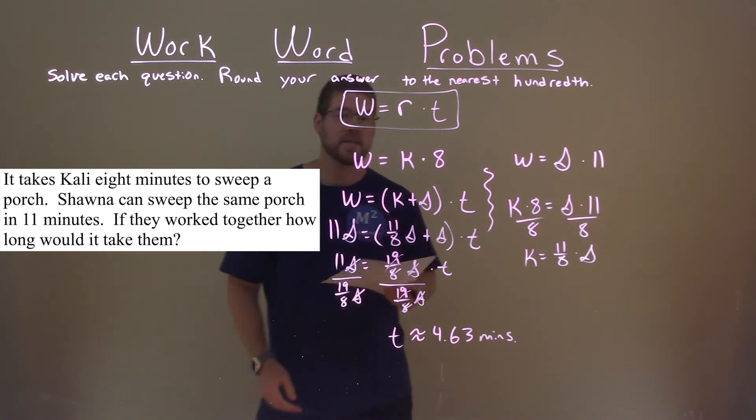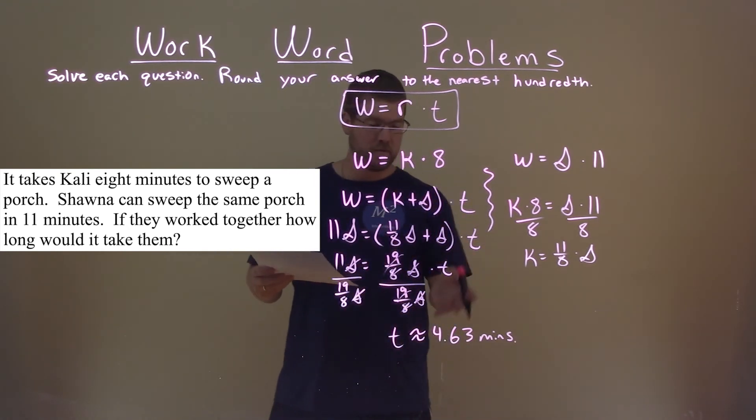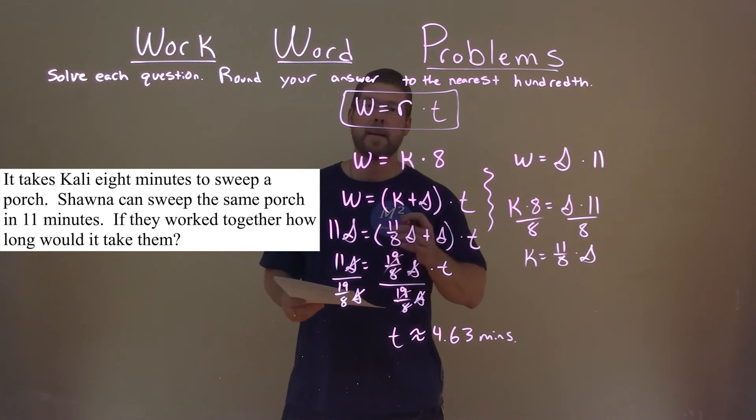And so if they worked together, they could sweep the porch in approximately, our final answer here, 4.63 minutes.